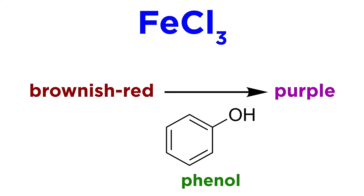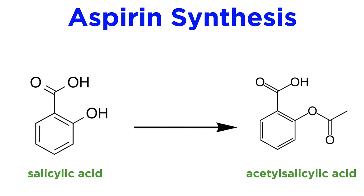To do that, we'll use iron-3 chloride. This compound changes color from brownish-red to purple in the presence of a phenol ring. Now, let's look at our starting material, salicylic acid, and our product, acetylsalicylic acid. Which one has a phenol ring? As you can see, salicylic acid has a phenol ring, and aspirin doesn't.